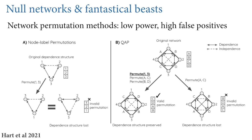The same problem arises in the study of social networks. People used to use permutation methods, but they just don't work — they don't do what they claim to be able to do. A 2021 paper by Hart et al. summarizes this, which has actually been known for decades: methods like quadratic assignment procedures simply do not statistically do what we think they do, because there is no clear, unique null network.